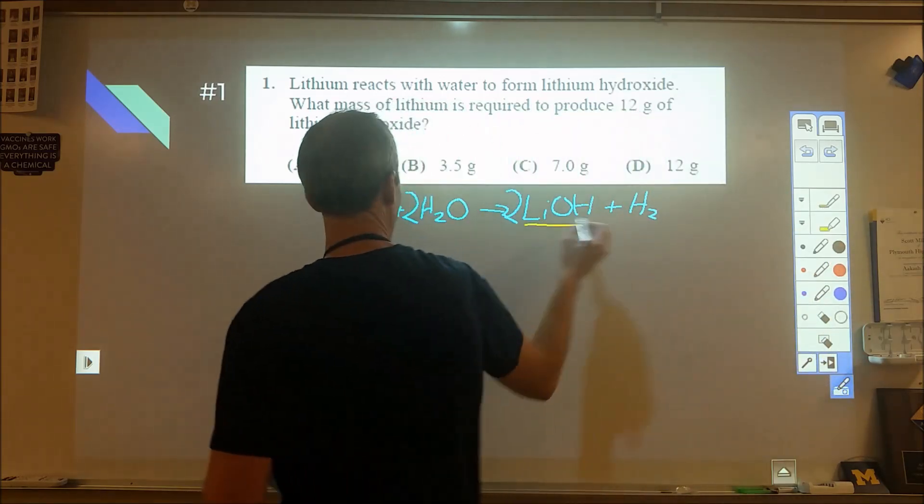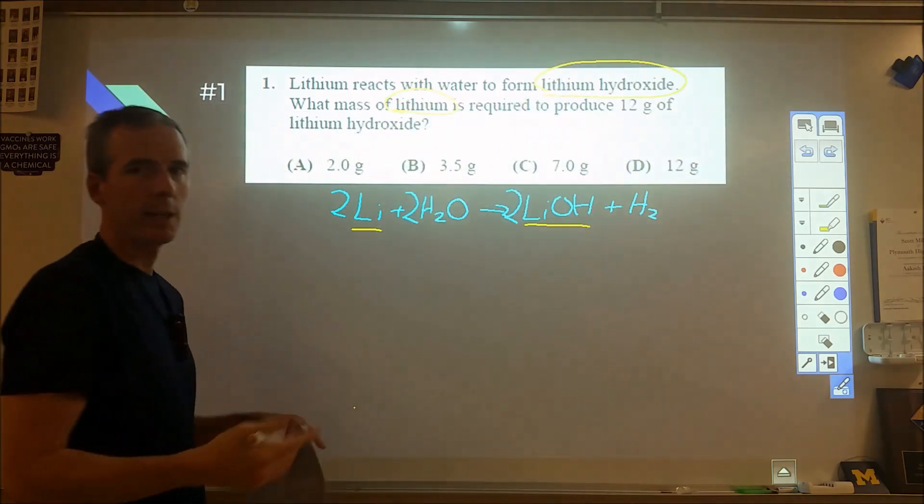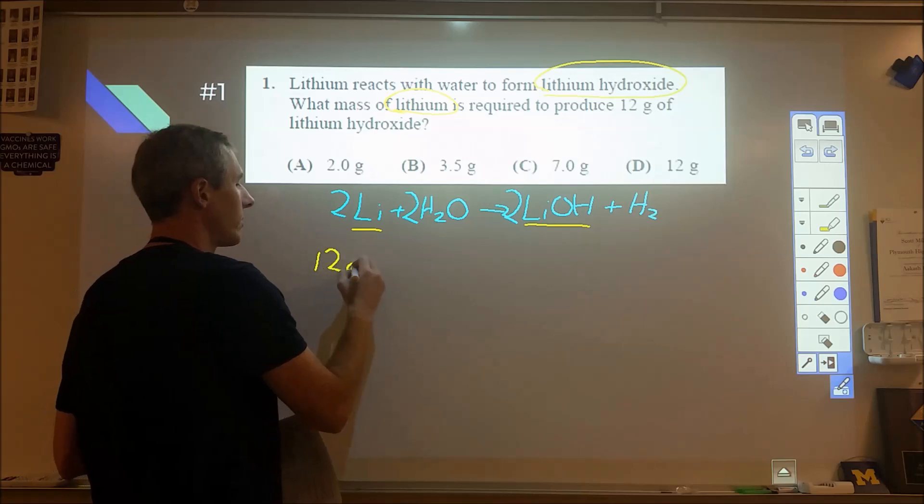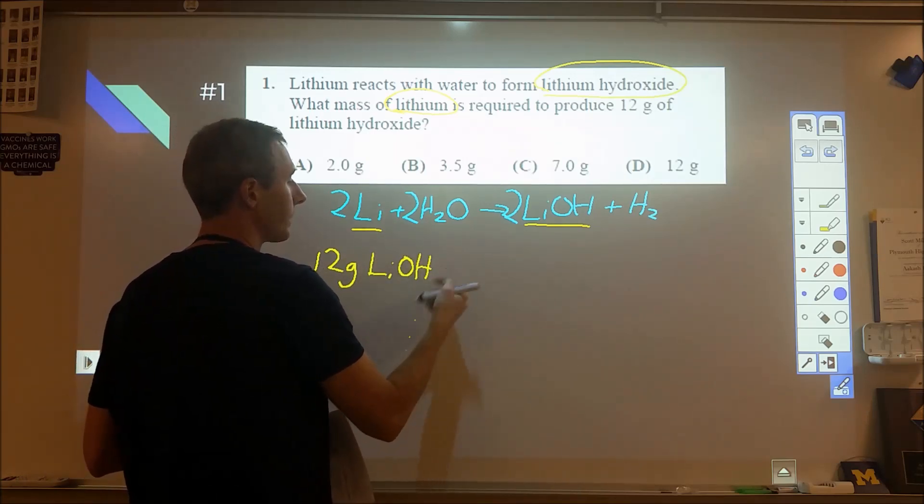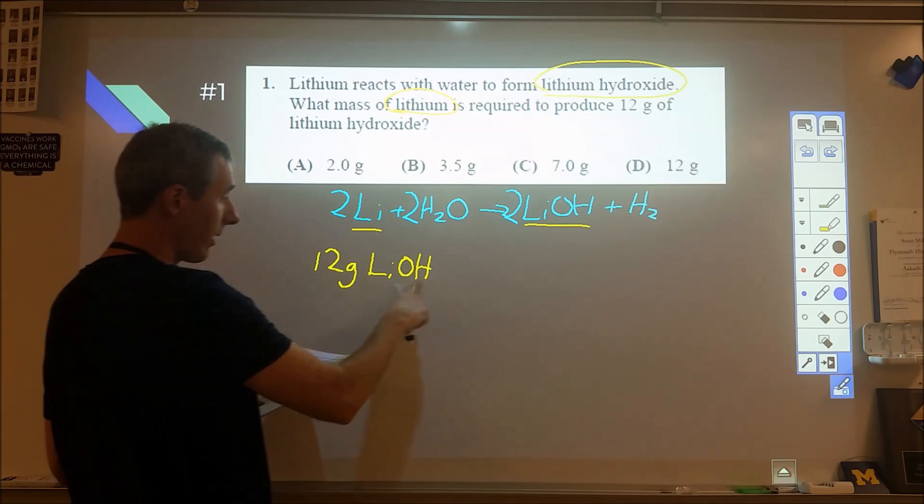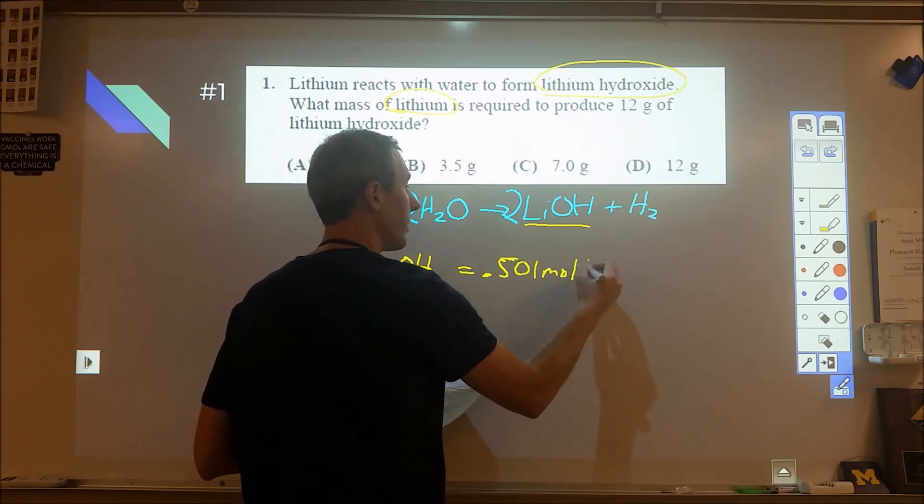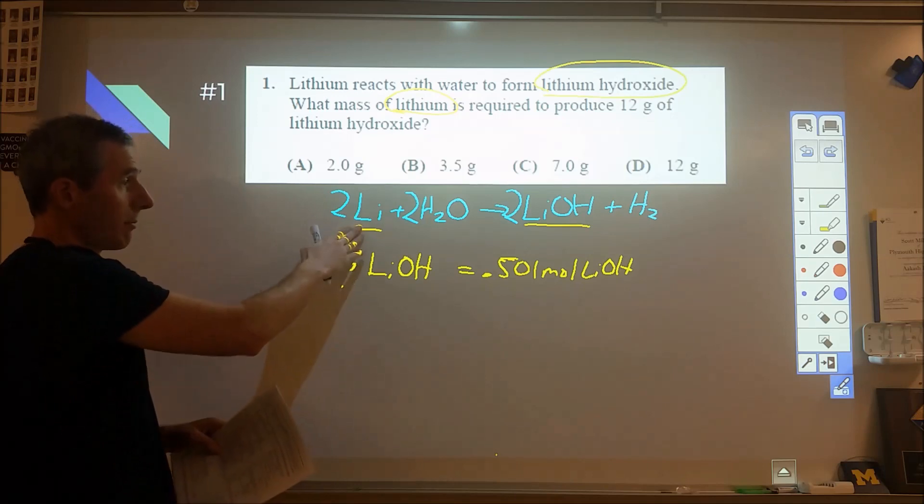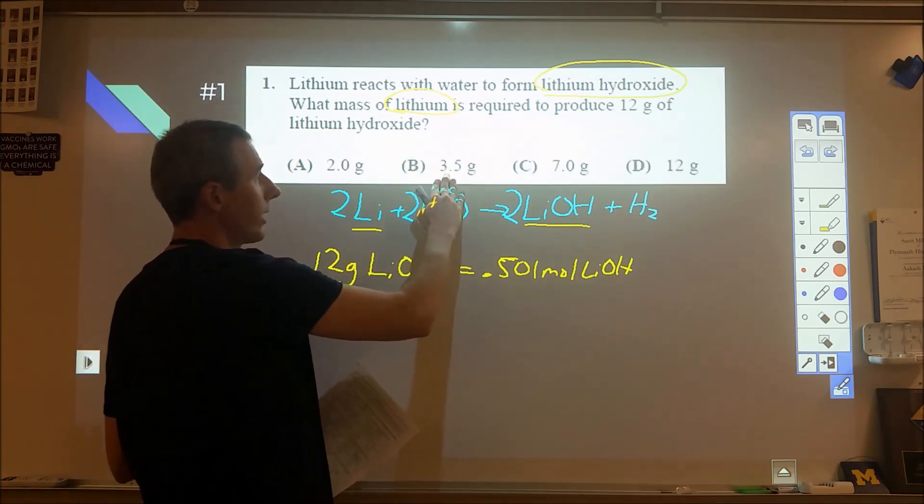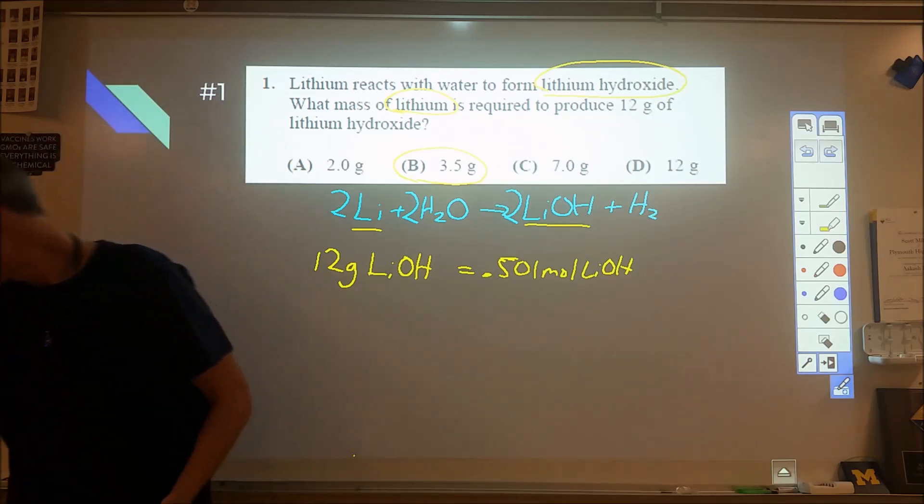When we compare the lithium hydroxide with the lithium, we're looking at a one-to-one mole ratio. When we're given 12 grams of lithium hydroxide, we divide by 23.95 to get 0.501 moles, which equals 0.501 moles of lithium metal. Multiply by the molar mass of lithium, 6.941, and we get 3.48 grams, which rounds to be 3.5 grams. Just a regular simple stoichiometry problem to start things off.